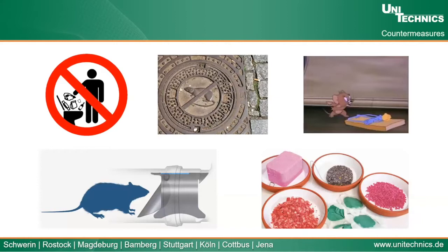What kind of countermeasures do we have against rats? The simplest way that everybody can do is to never flush food into toilets, since food will get into the sewer and become a food source for rats. We can also use rat-proof or closed manhole covers to block rat entry and exit from sewers. We can also use rat traps and products specially designed for sewers to stop rats moving through drainage pipes.